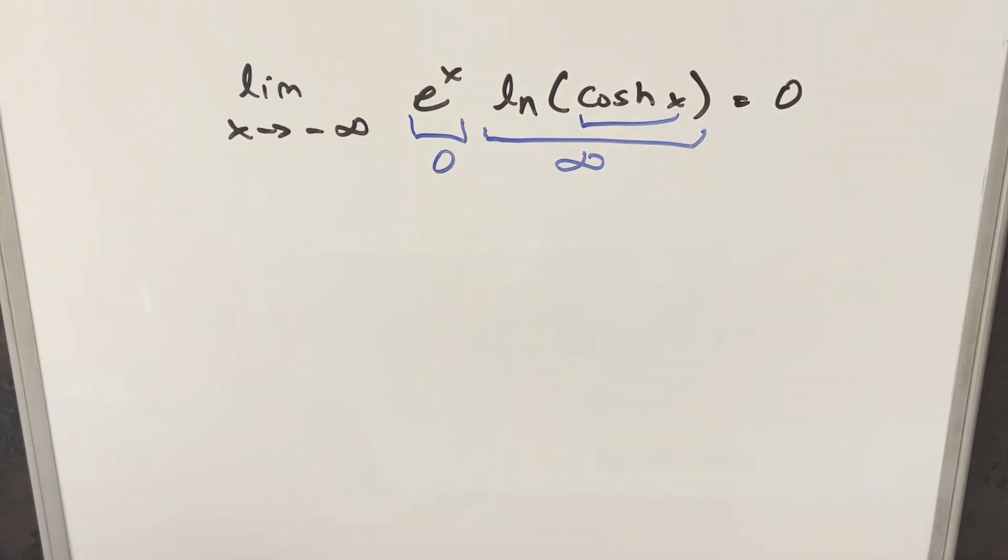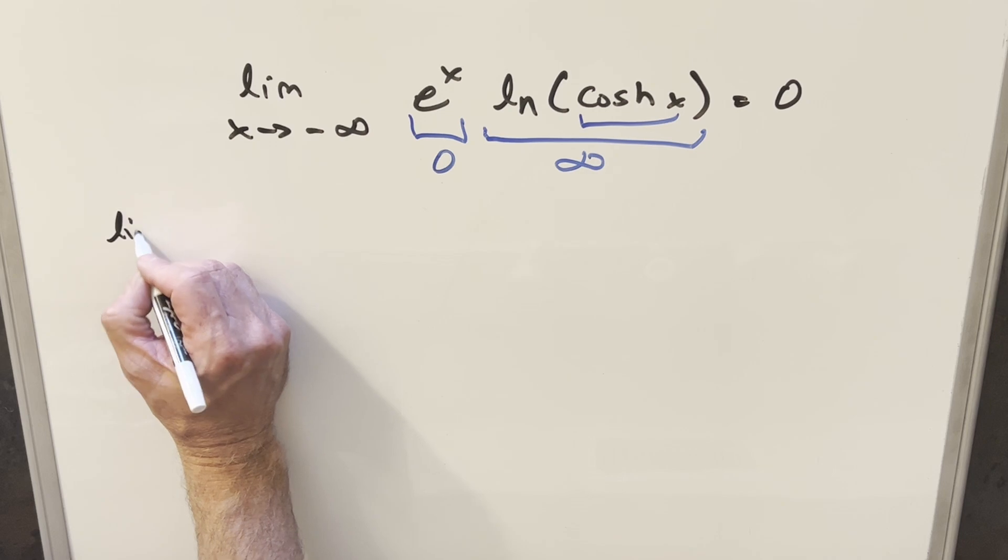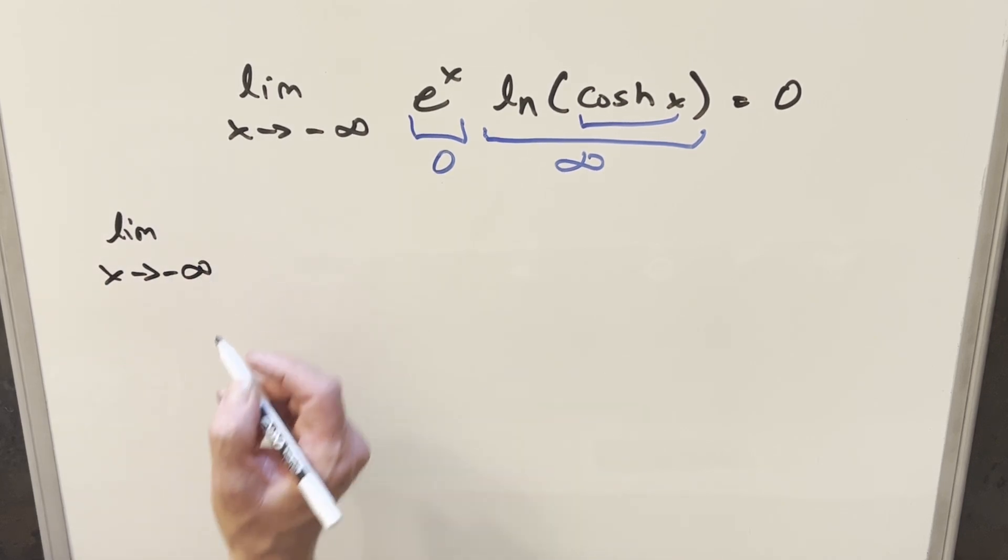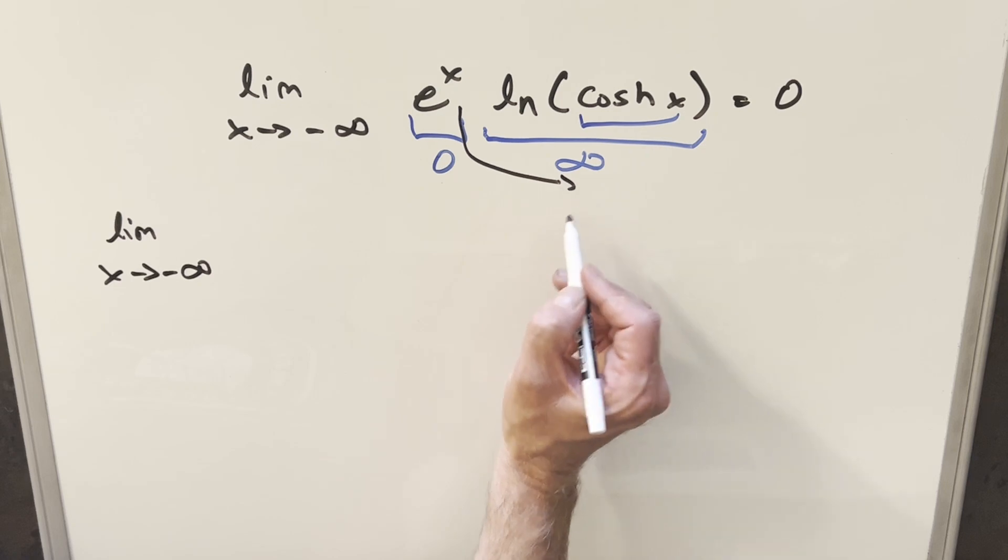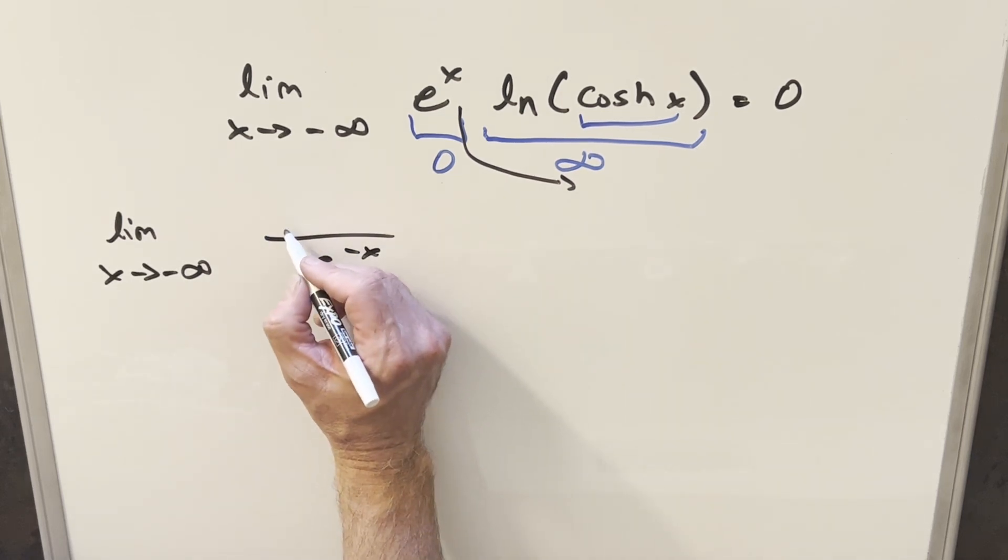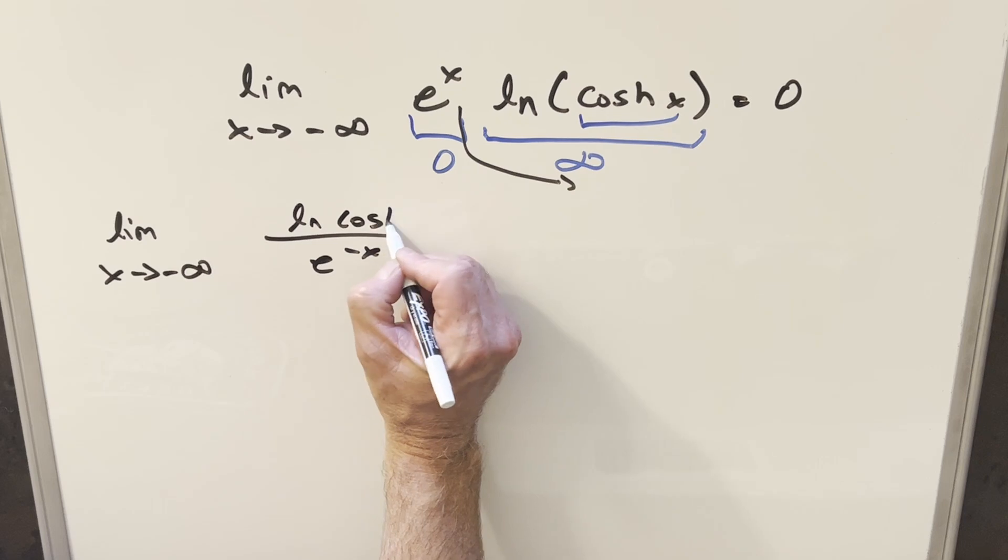So what I want to do is actually use L'Hopital's rule. And what I need for that is it's always going to be written in terms of a fraction. And so what I can do is bring the e to the x into the denominator and just write it as e to the minus x. And now I think this is something we can work with.